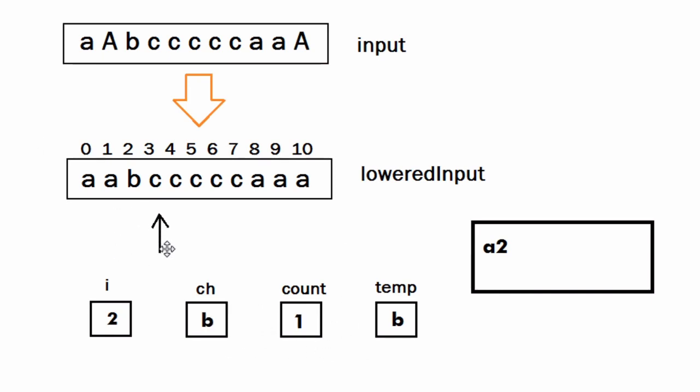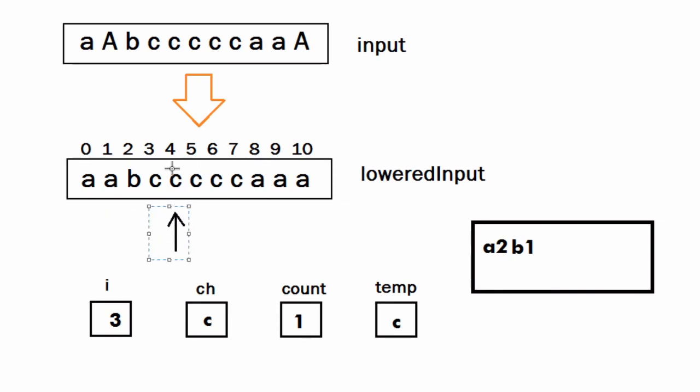We then move to the next character C, copy it into temp, and compare ch and temp. They don't match, so we display ch and count (B1), then copy temp into ch and move to index 4. The character is C again, so temp holds C and ch holds C — they match, so we increase count to 2. We continue until index 7, at which point count becomes 5.